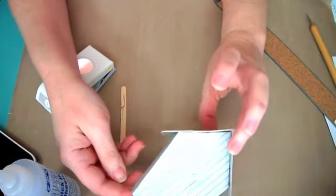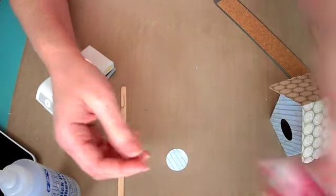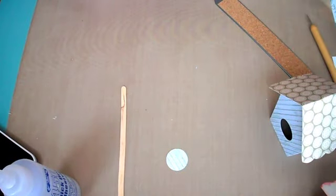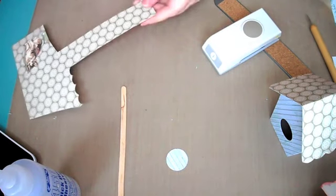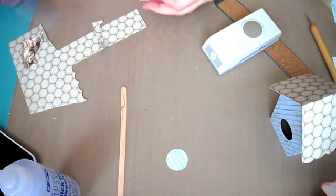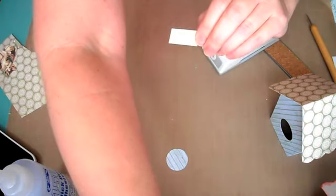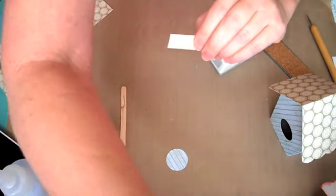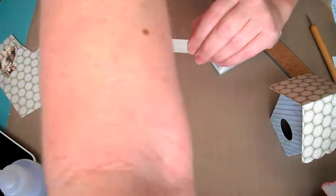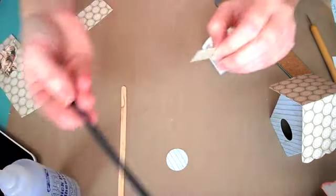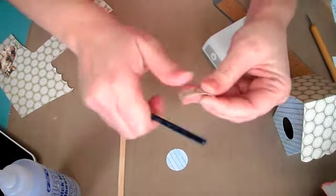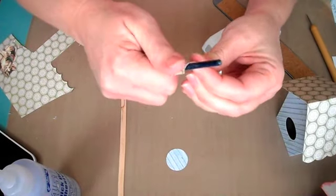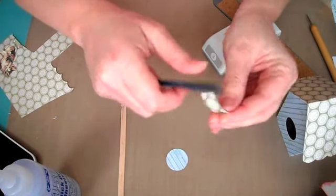There is basically the birdhouse is done. Now you just need to make your perch. So to make the little perch, all I did was take a piece of paper, and then I just took a paintbrush, and then I just kind of started a curve in the paper. Because all I did was roll up the paper.